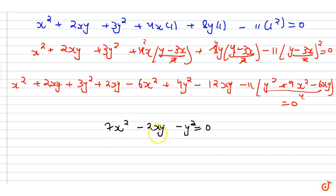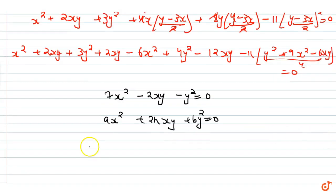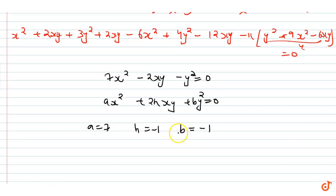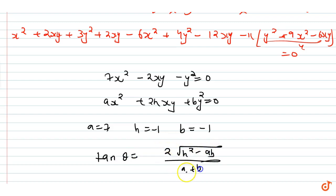Now what is this equation? ax² + 2hxy + by² = 0. So here A = 7, H = −1, B = −1. Now I have A, H, and B. I use tan θ — the angle between them — that is: 2√(H² − AB) divided by (A + B).